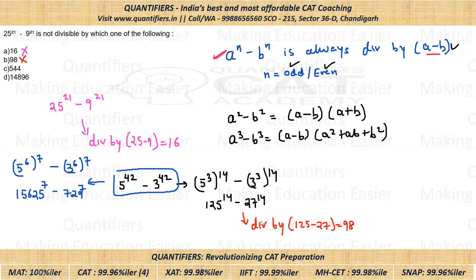Again students, this is of the form a to the power n minus b to the power n, so this will be divisible by 15625 minus 729. And students, if you find the value of this, it comes out to be 14896. So this is also divisible by 14896, so this also cannot be our answer.